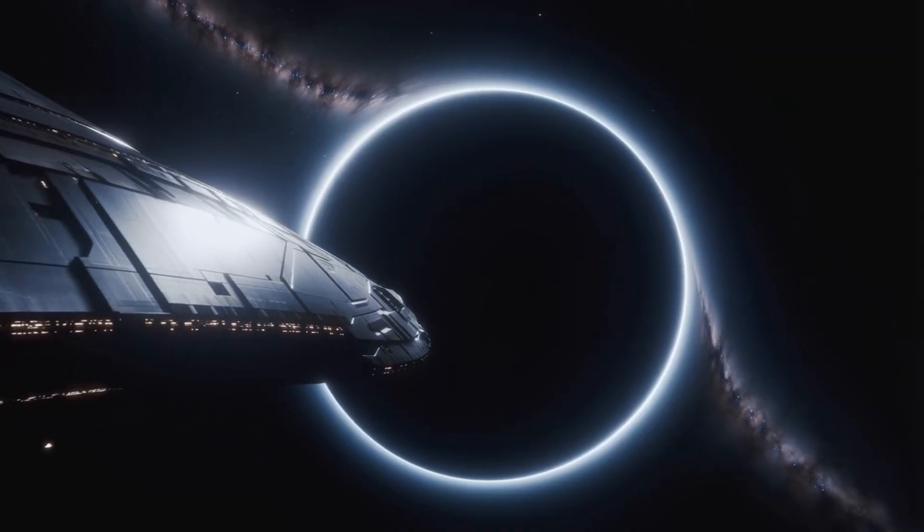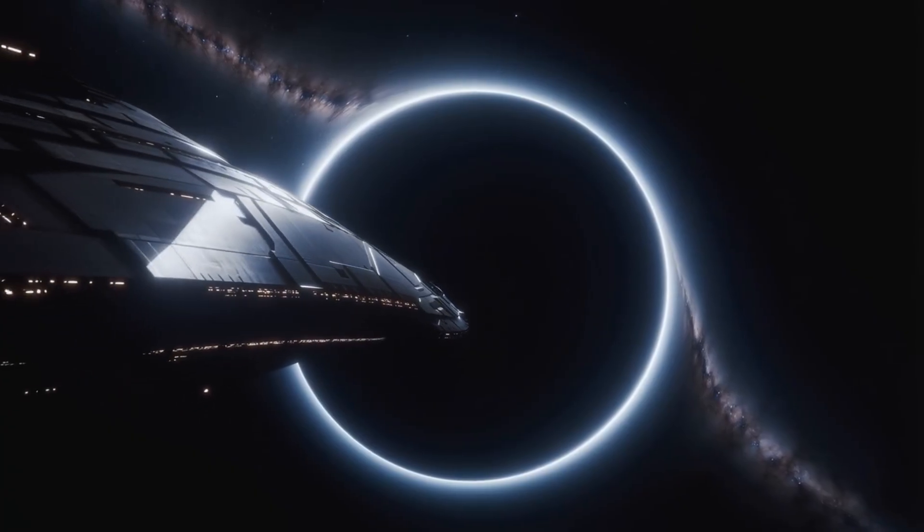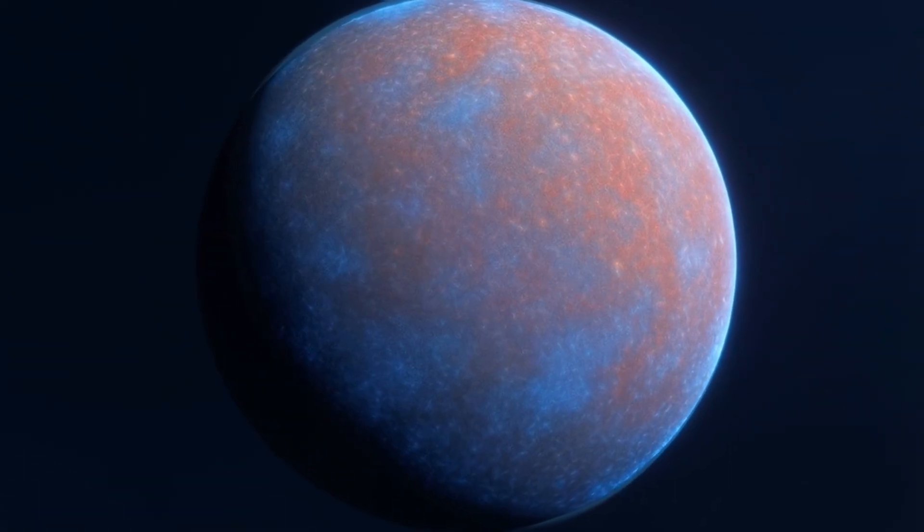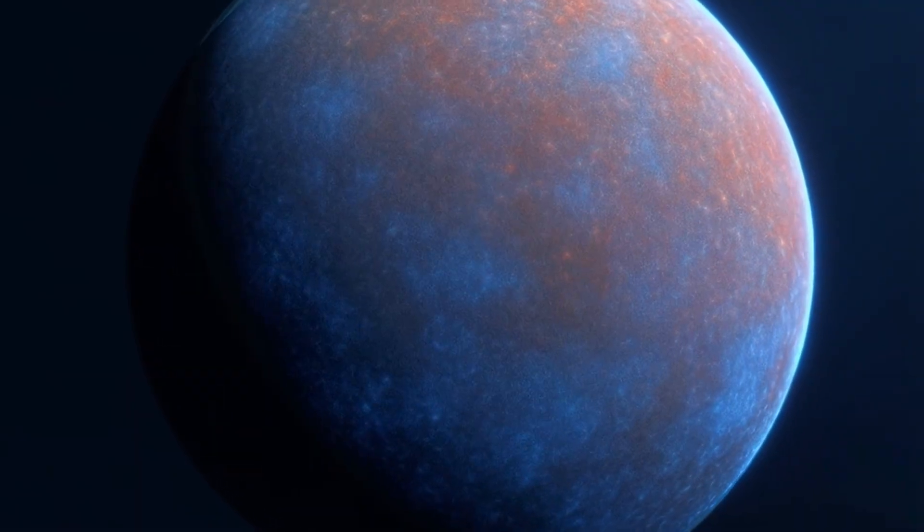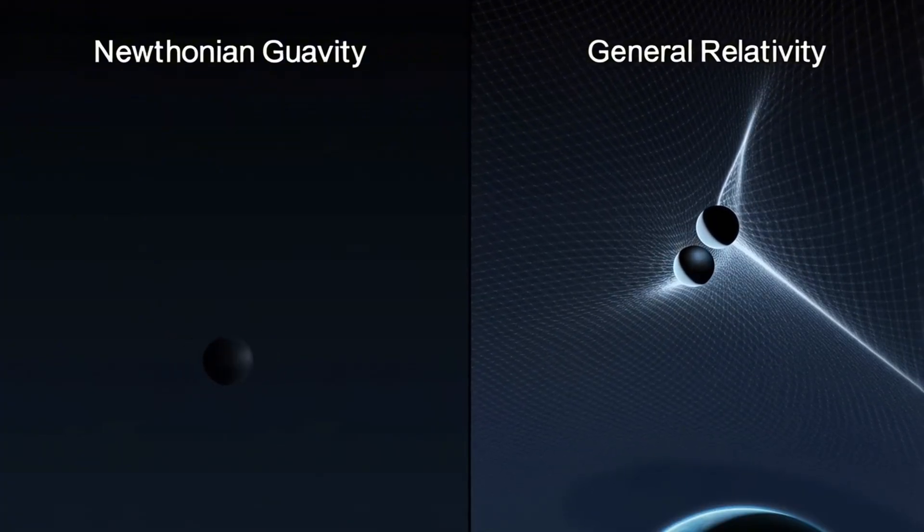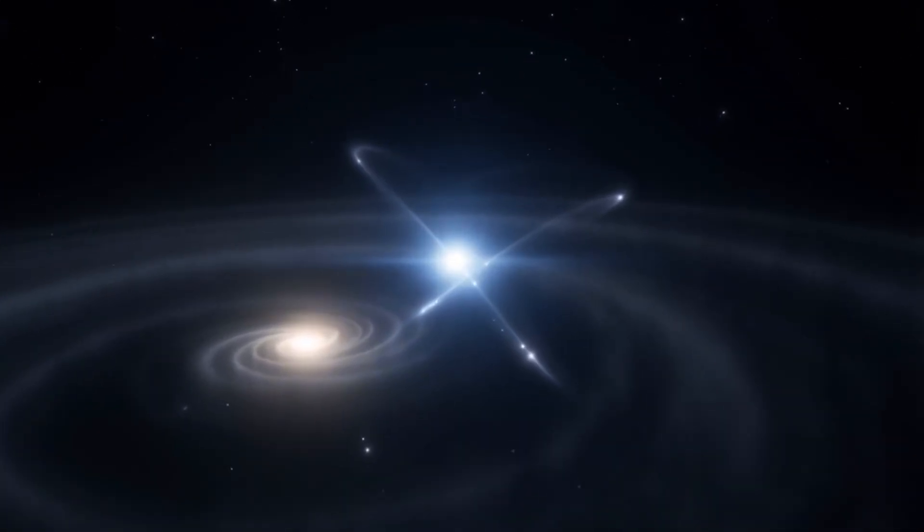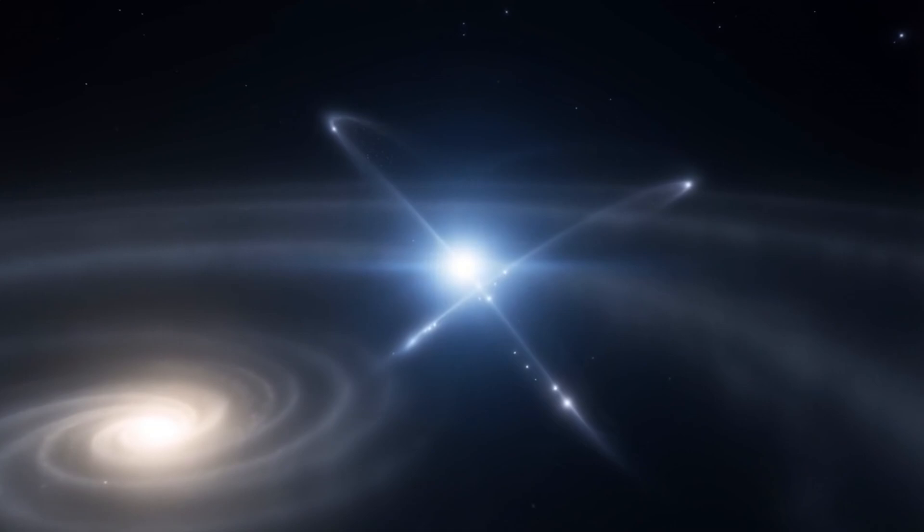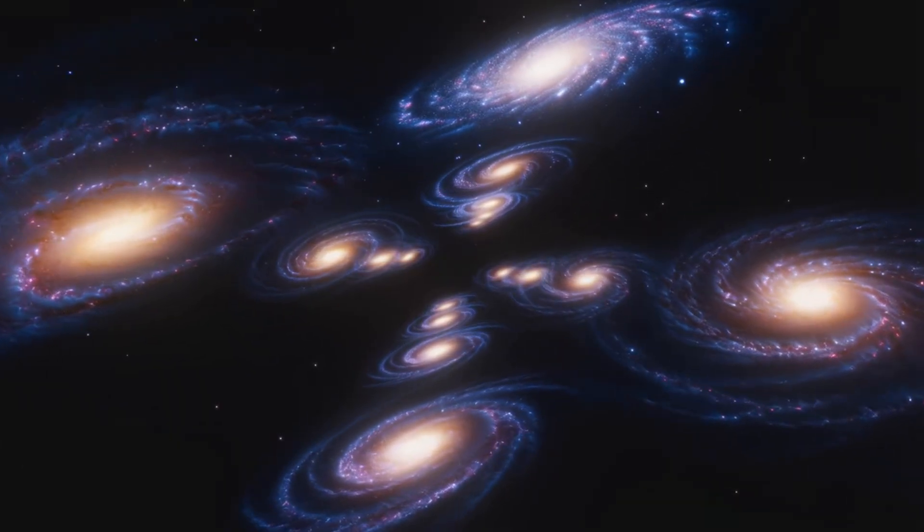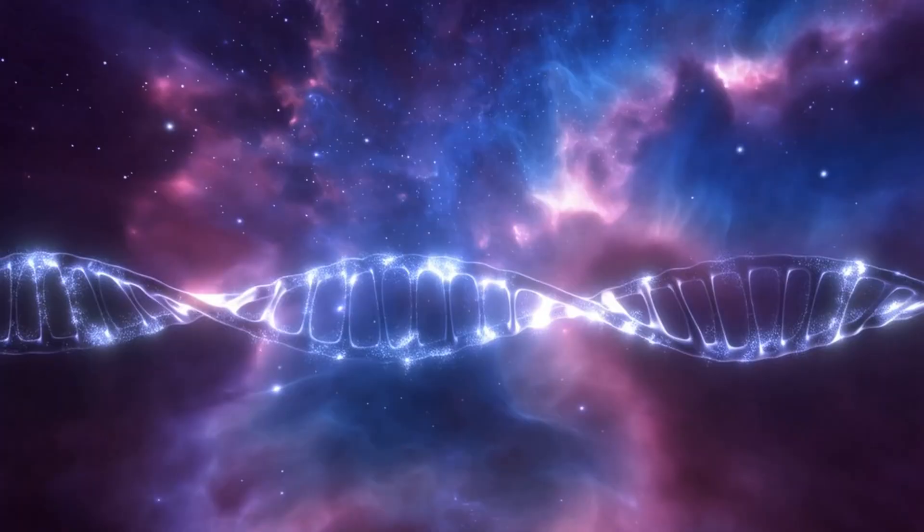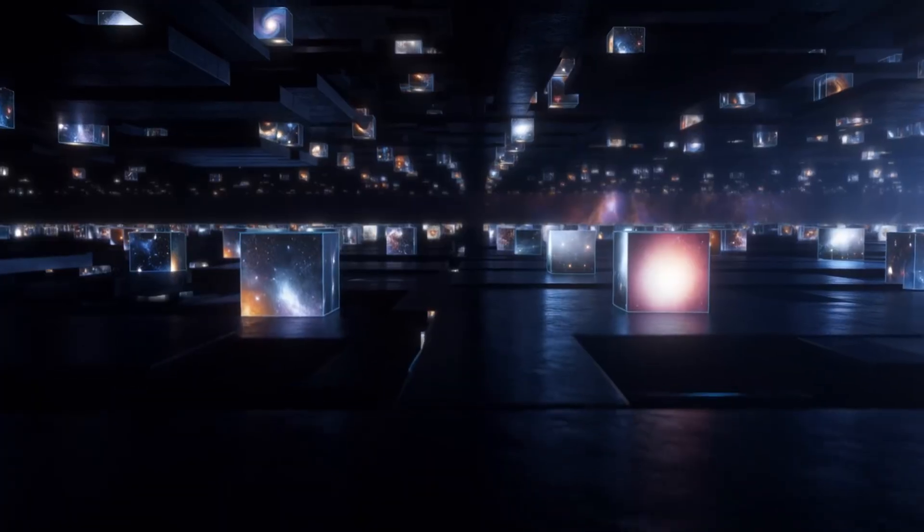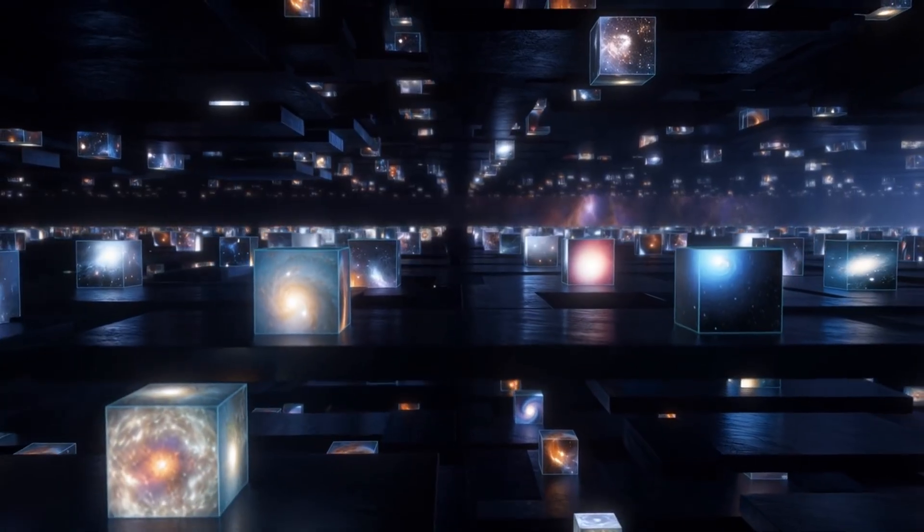And all that remains is the question. He floats alone. No sound, no weight, no up or down, only the slow drift of a human being suspended in the dark ocean of the universe. His visor reflects the stars, thousands of them, millions, and yet he feels smaller than ever. Behind him, far behind, Earth is no longer visible. The planets are gone. The sun is gone. All that remains is blackness pierced by points of light that have traveled billions of years just to reach him. And now he's here, drifting, gazing outward as if searching for something beyond the stars.